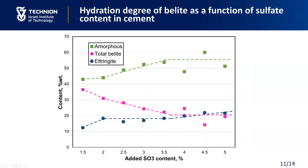The mineral composition of hydrated cements is presented in this figure. The graph shows the dependence of ettringite content, belite, and amorphous phase (which is CSH gel) on the sulfate content in cement. The dependence of these phases can be conditionally divided into three stages: the first stage from 1.5% to 2%, the second from 2% to 3.5%, and the third after 3.5%. At the first stage, the content of ettringite grows while the amorphous phase remains unchanged, and belite content decreases, indicating that all sulfates are consumed in the formation of ettringite.